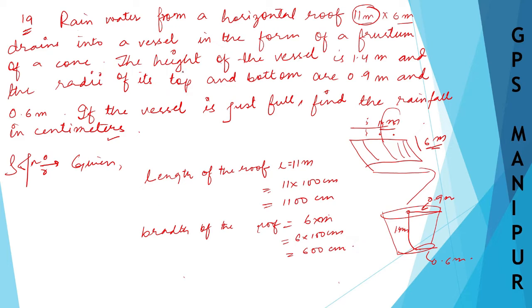And next thing, the height of the vessel, that is height H of the vessel, let me write H itself, it is 1.4 meters, which will be equal to 1.4 × 100, which will be equal to 140 centimeters. And radius R1 is equal to 0.9, which will be, if you multiply by 100, 90 centimeters.